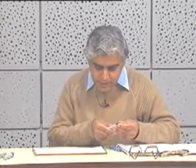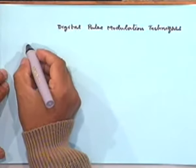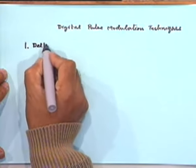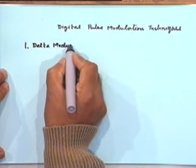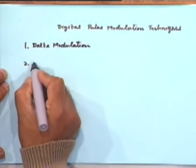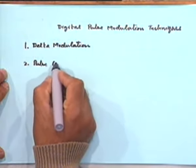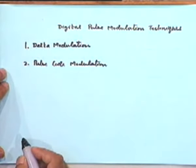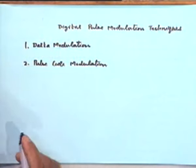In analog pulse modulation, we have continuous variations possible; in digital, only discrete variations are permitted. Now there are two primary kinds of digital pulse modulation schemes. There are two generic kinds: one is called delta modulation and the other is called pulse code modulation. Of these, delta modulation is very simple to implement, extremely simple to mechanise, and therefore we will consider delta modulation first.